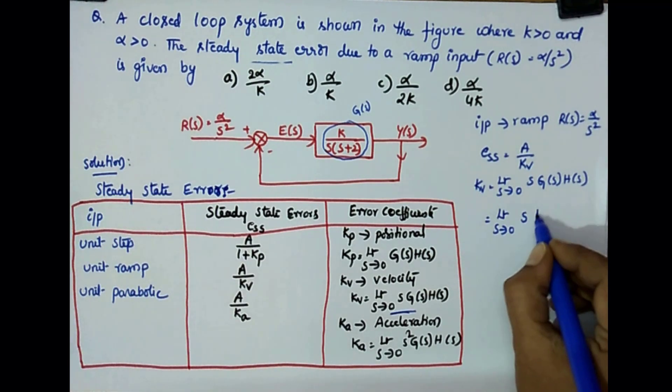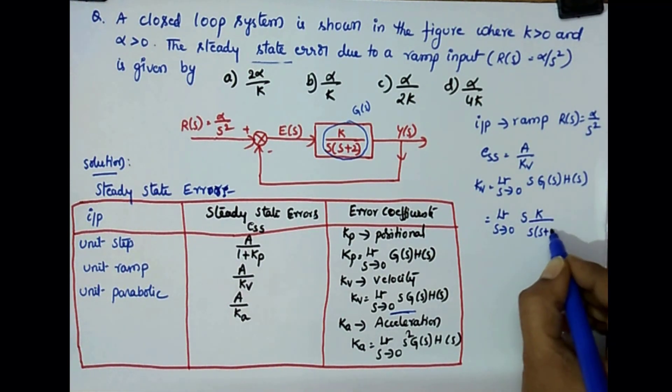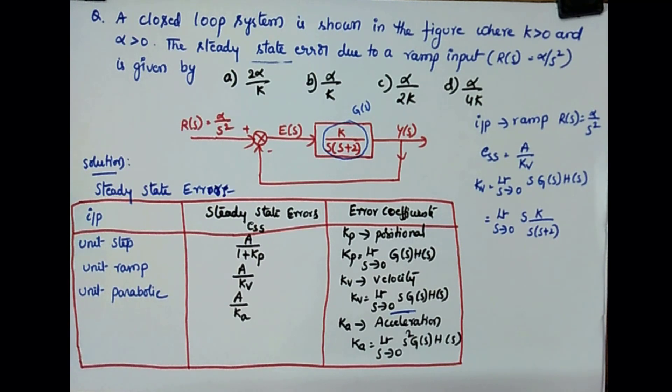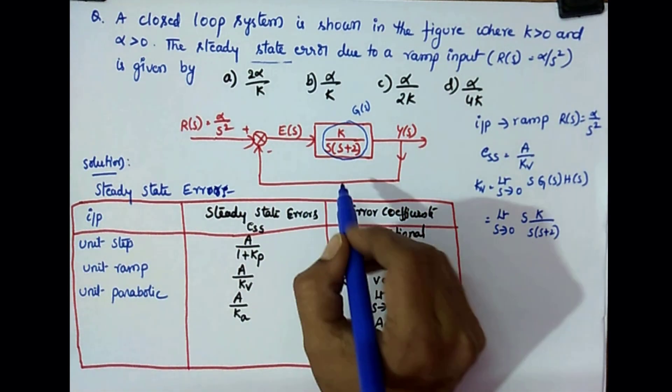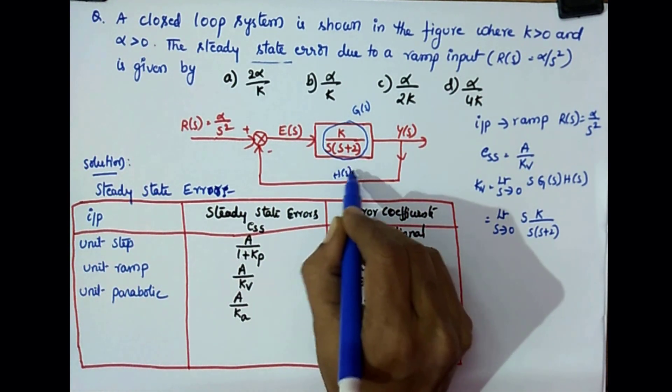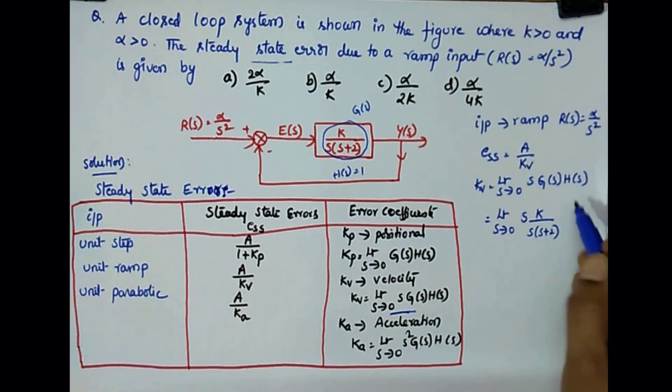So Kv is K by S into S plus 2. What is H(s), the feedback transfer function? As you are seeing it is unity negative feedback. So your H(s) is 1. So this is 1.